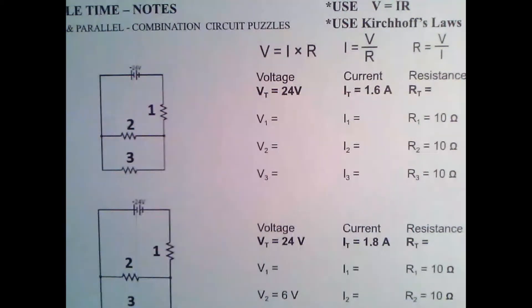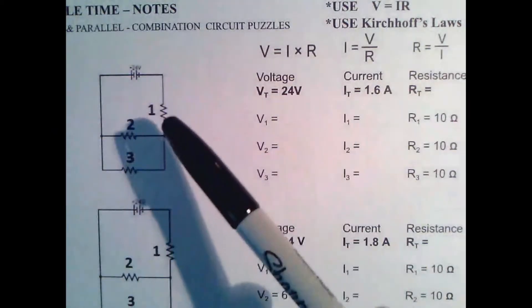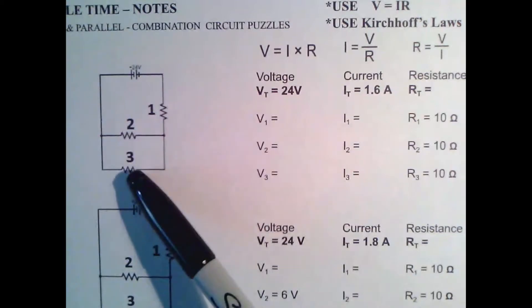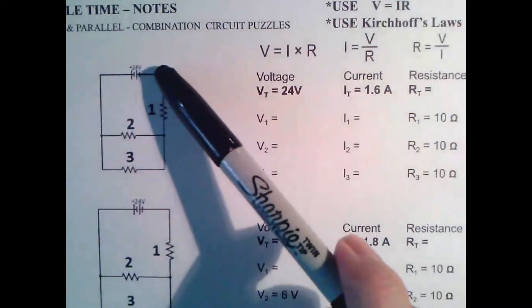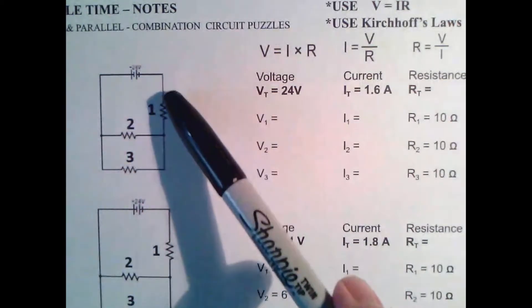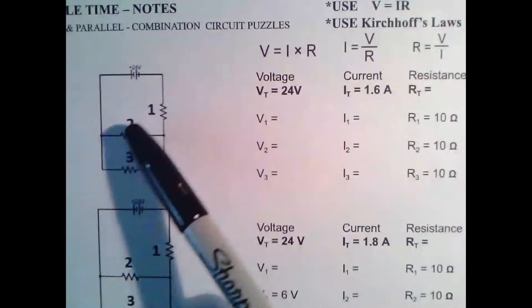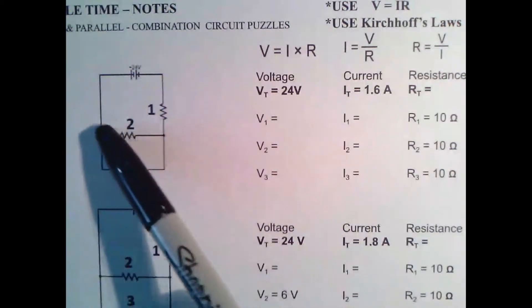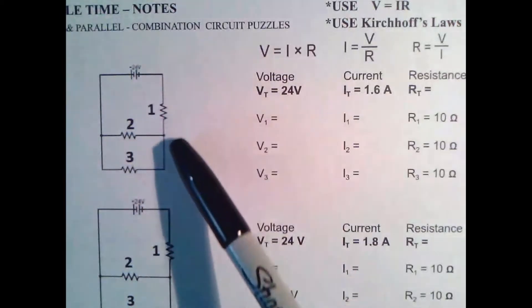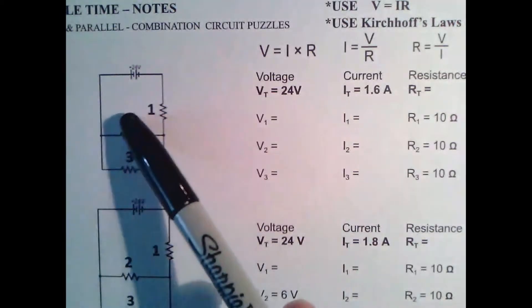So this is called a series and parallel circuit. It's a combination because you'll notice that these are in parallel with each other, but when you think about where the battery is and you're watching where it's going, these electrons are in series with each other. So one and two are in series with each other, one and three are also in series with each other via this path, but two and three are in parallel with each other.